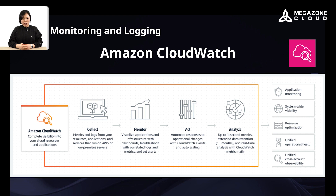AWS CloudWatch is a monitoring and observability service that provides real-time insights into your AWS resources and applications. With AWS CloudWatch, you can set up custom dashboards, alarms, and notifications to track and respond to operational issues in your infrastructure. AWS CloudWatch Logs is a feature within AWS CloudWatch that allows you to collect, monitor, and analyze log data from your applications and systems. By leveraging AWS CloudWatch Logs, you can gain valuable insights from your log data and perform advanced searches to ensure the security of your AWS resources.